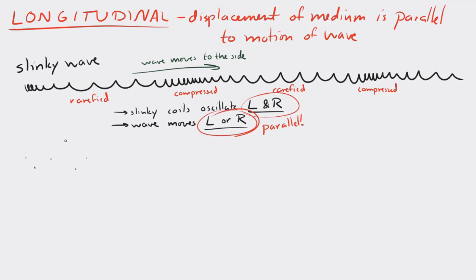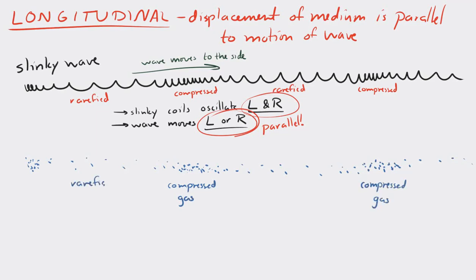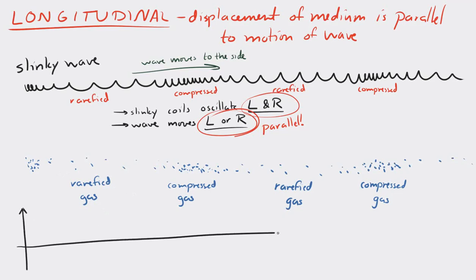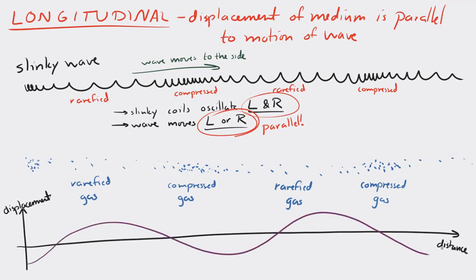Sound waves are also longitudinal waves. In a sound wave, there are points where the gas is compressed and points where it is rarefied. Each gas molecule oscillates back and forth in the same direction the wave is traveling. You can also have displacement-versus-distance graphs for longitudinal waves — for a longitudinal wave, the graph tells you that here the medium has been shifted in the positive direction, to the right, and here to the left, alternating along the wave.